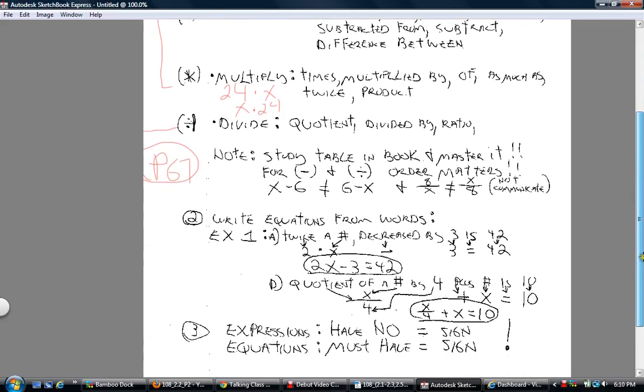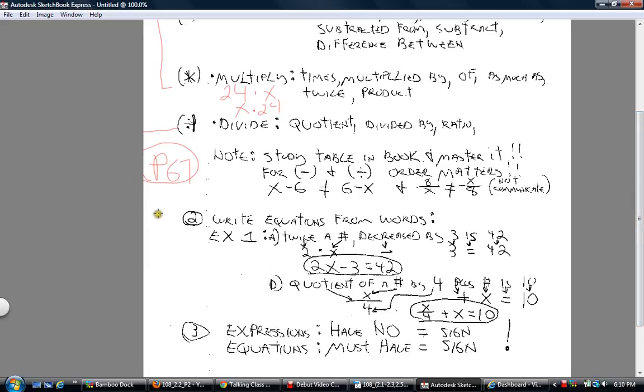Looking at objective two—by the time you see a circle number, make sure you know that's the objectives you can match following along with the book. It says write an equation from the words. So example one here, 1a says twice a number.